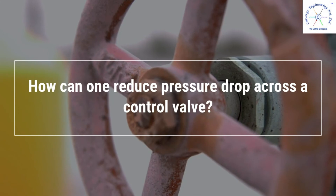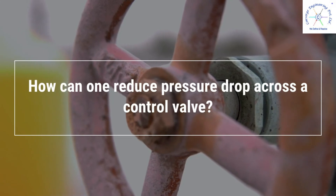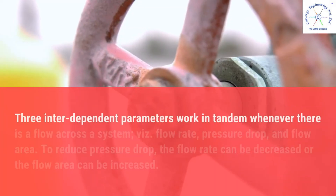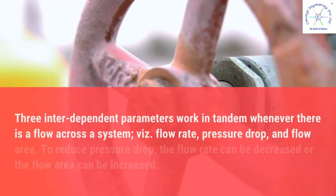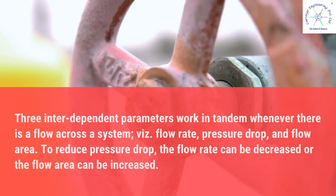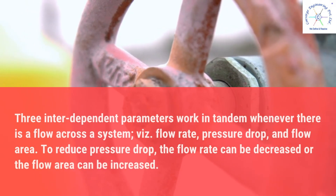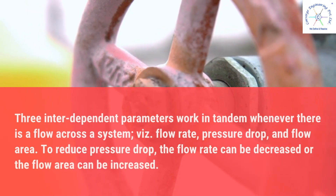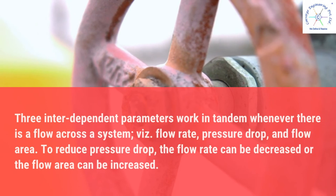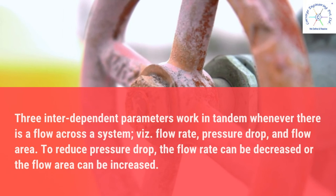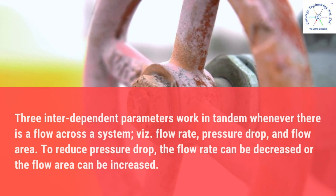How can one reduce pressure drop across a control valve? Three interdependent parameters work in tandem whenever there is flow across a system: flow rate, pressure drop, and flow area. To reduce pressure drop, the flow rate can be decreased or the flow area can be increased.